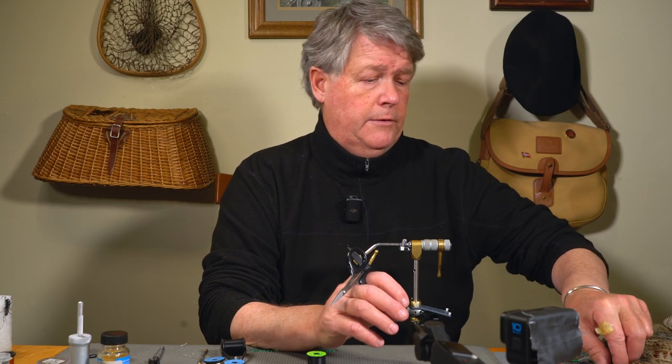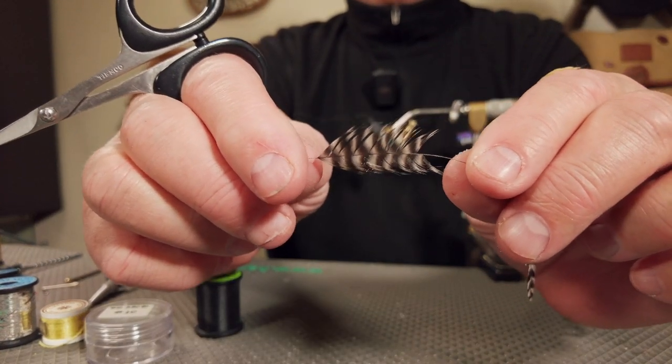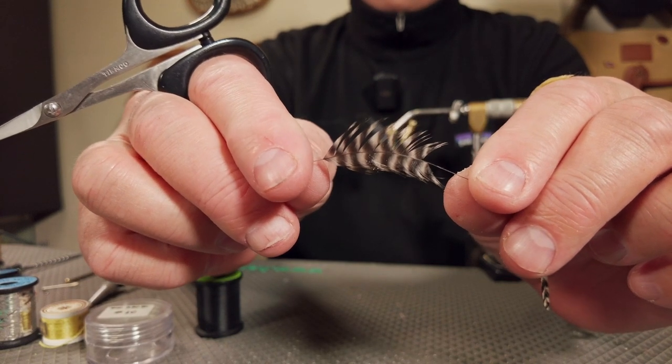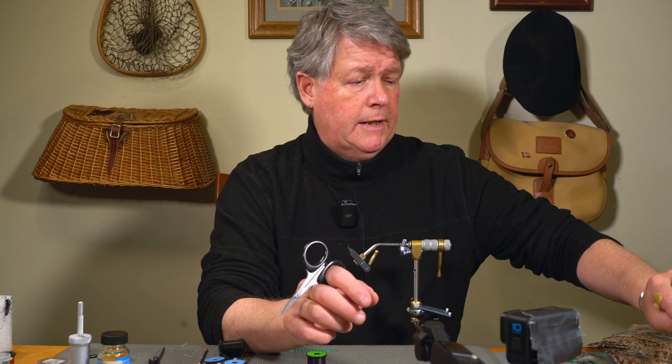And that as well is a variation. The original pattern called for a grizzly hen hackle, and you can tie it either way. I'm going to do the Hungarian partridge.